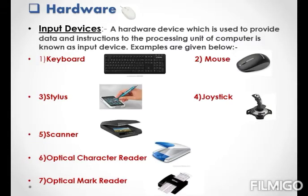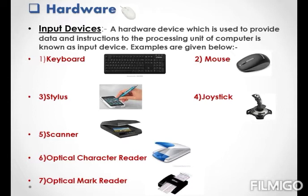Hardware. Now students, what do you understand by hardware? Have you ever heard the word hardware before? The physical components of a computer system that we can see and touch are called hardware. The input devices, output devices, storage devices, and the central processing unit CPU are the examples of hardware. Now we are going to look at all of them one by one.